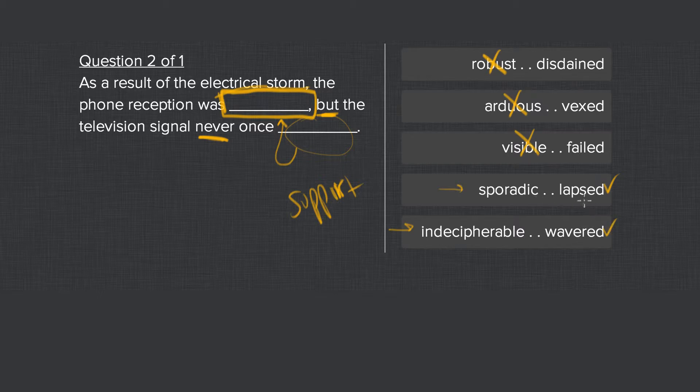What that means is it looks like we have two answers that both work, but in reality if you go back to the first blank only one of these works. So you say the phone reception was sporadic. That word works. Indecipherable turns out actually does not work.